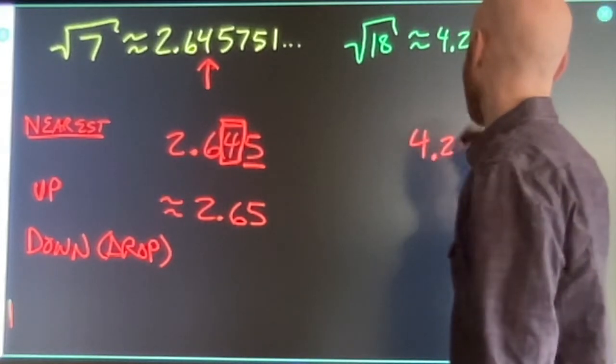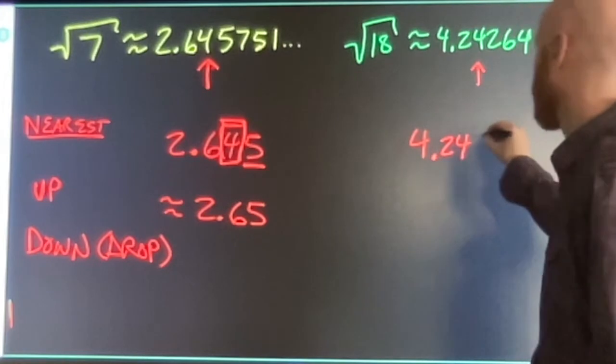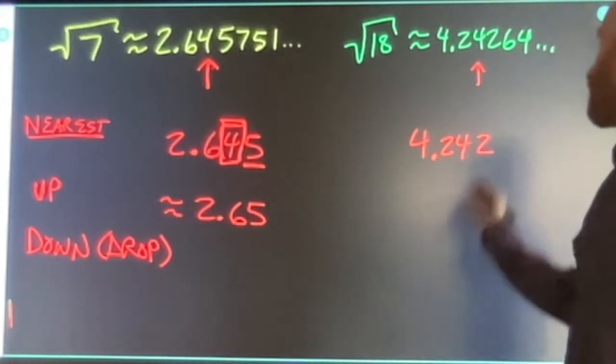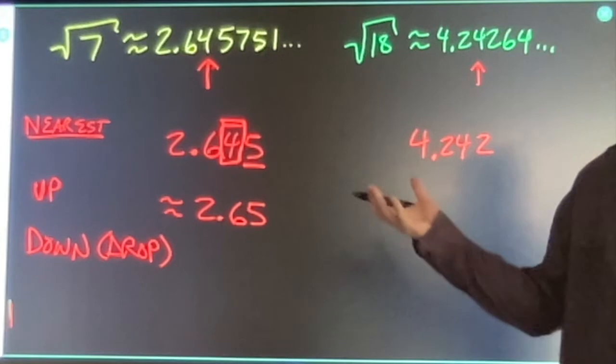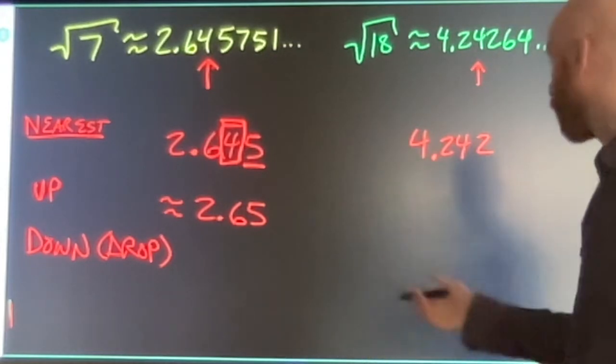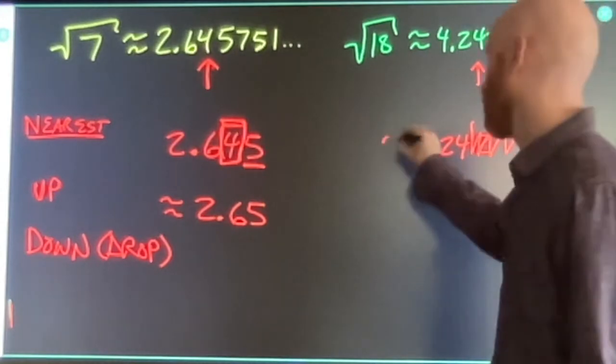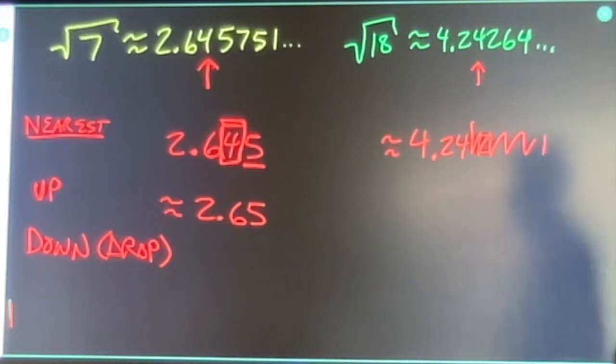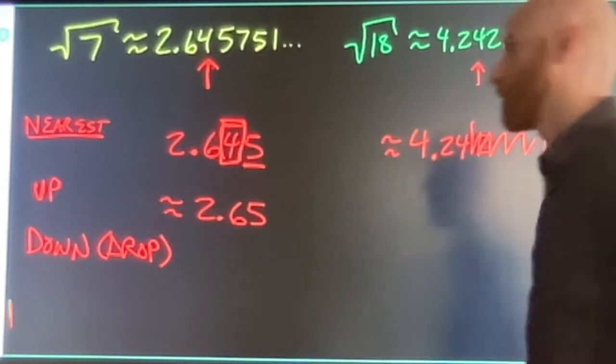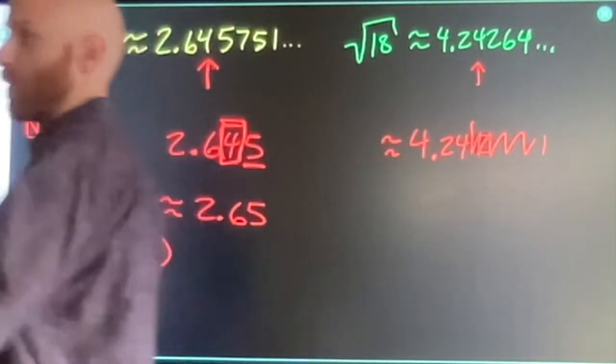If I was to round to the nearest hundredth place, four point four. The next digit is a two. That's less than five. So I'm going to round down or I'm going to drop. I'm going to drop all the digits after the hundredths place. That's rounding to the nearest whatever you're asked for.